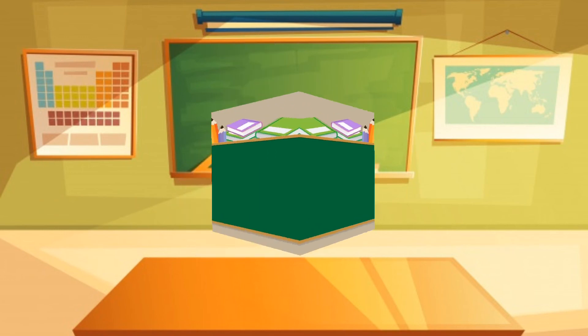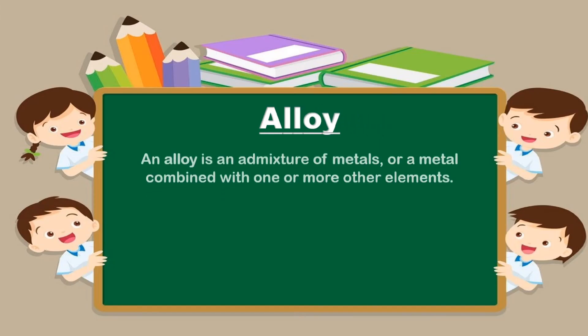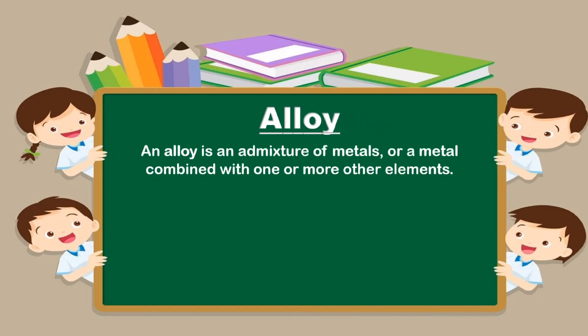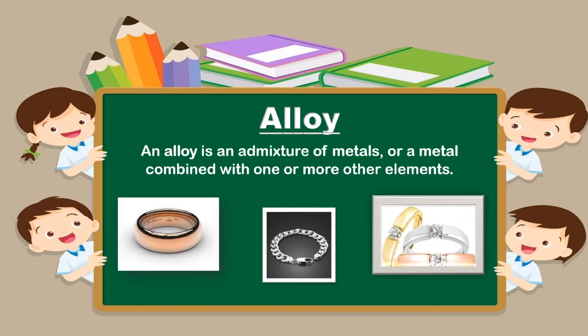I have some trivia for you. Did you know that homogeneous mixture can also be in solid form? This is in the form of alloys and steel. An alloy is an admixture of metals, or a metal combined with one or more other elements. For example, combining the metallic elements gold and copper produces red gold. Gold and silver become white gold. And silver combined with copper produces sterling silver.